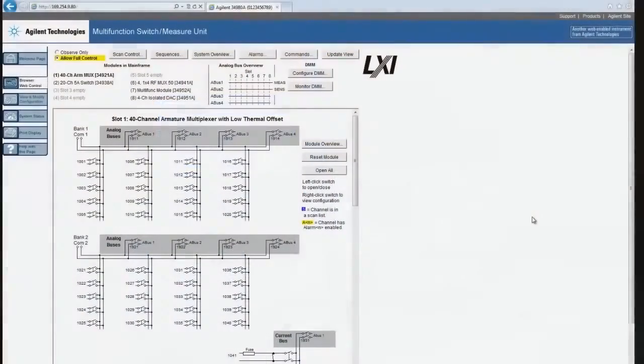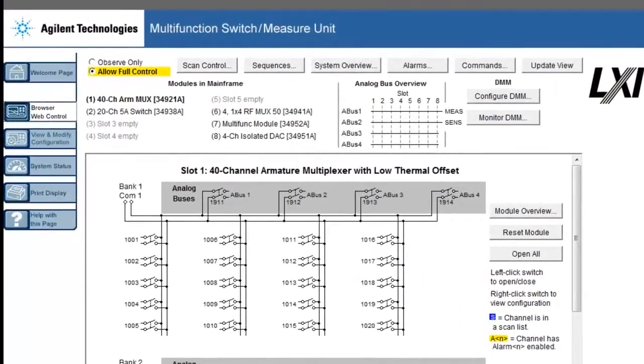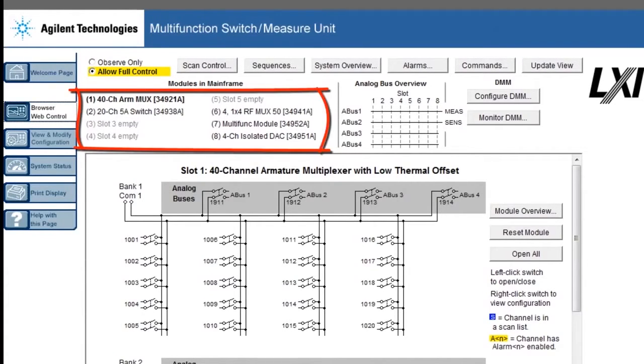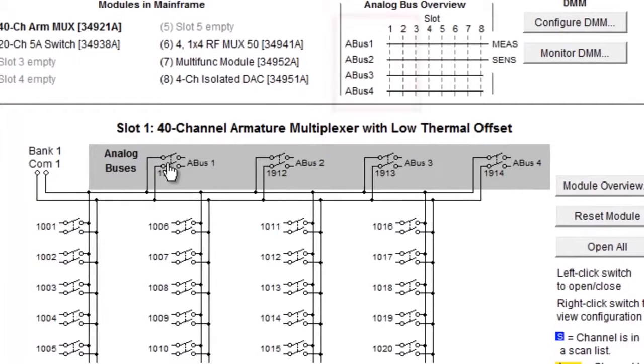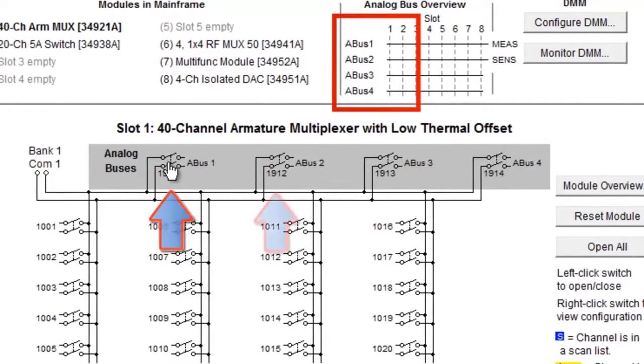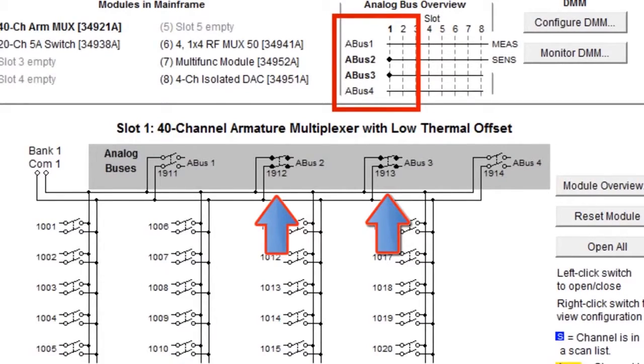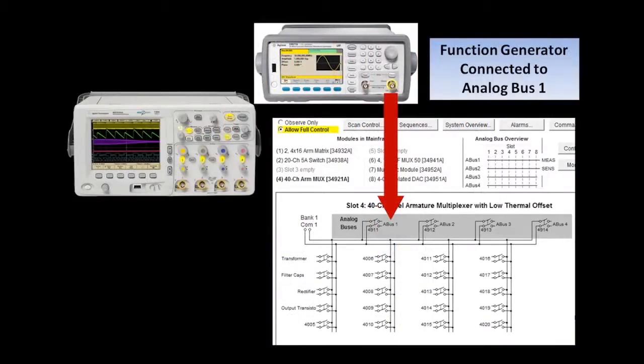So this 34980 comes with a built-in web user interface, which is very useful so that you can see the overall topology of what's happening inside the box. As you can see at the top, there's switches that control each one of the four analog buses. I've used the function generator, it's set up to output a sine wave, and the sine wave has been fed into analog bus 1.